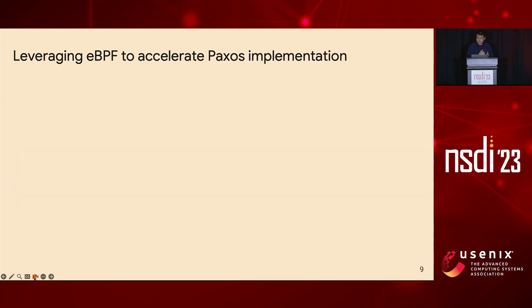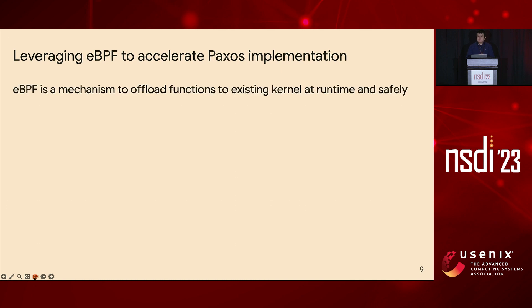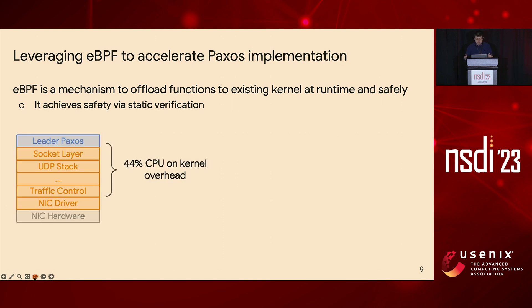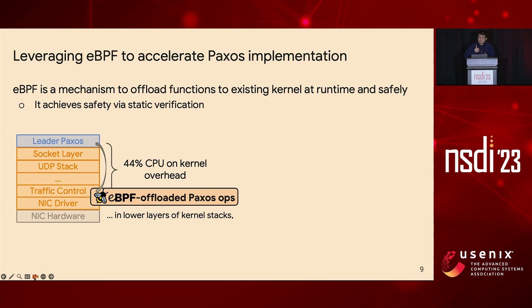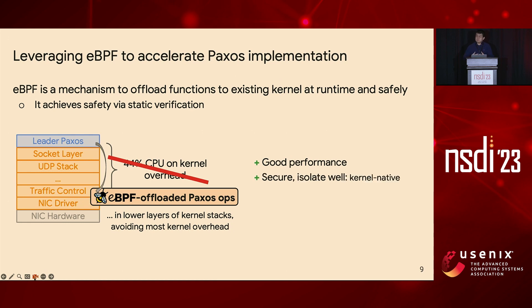Our key technique, as shown in the title, is to leverage eBPF to customize the existing kernel and accelerate Paxos implementation. Basically, eBPF is a mechanism to offload customized functions into an existing kernel at runtime in a safe way. It achieves security using static verification for offloaded functions. As shown in this diagram, the eBPF mechanism allows us to offload Paxos operations to run in a lower layer of the kernel, thus avoiding most of the kernel overhead — for example, context switching and heavyweight stack traversing. This gives us good performance, and more importantly, it is secure, because it is a safe kernel-native mechanism. It is cloud-friendly without busy polling and reuses the existing kernel networking stack.